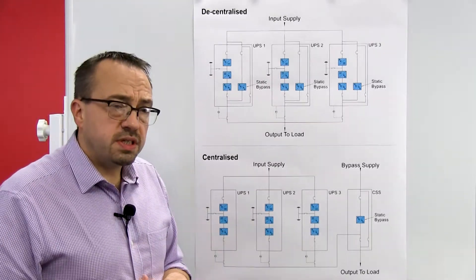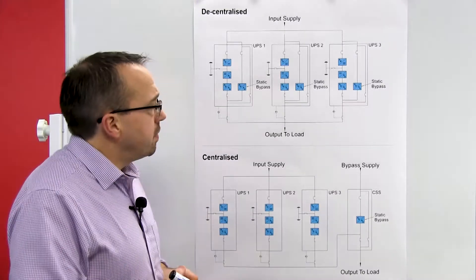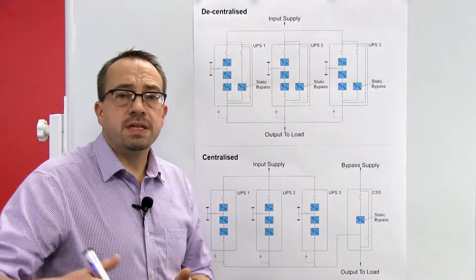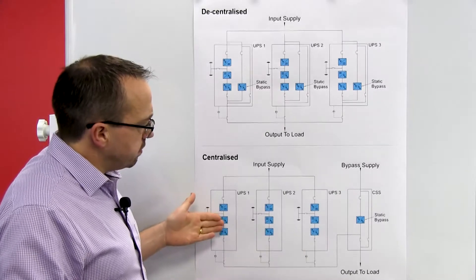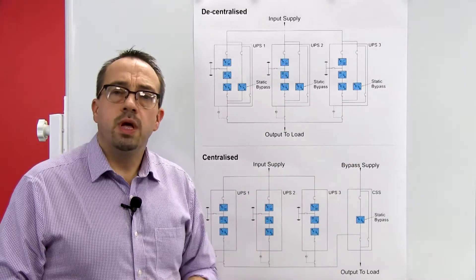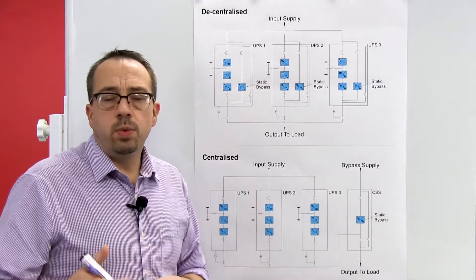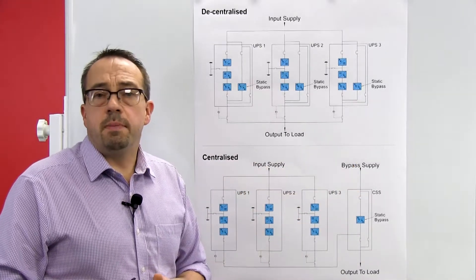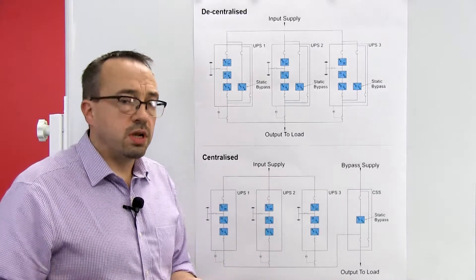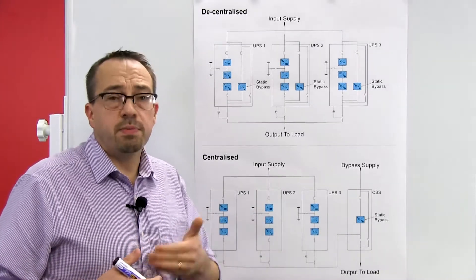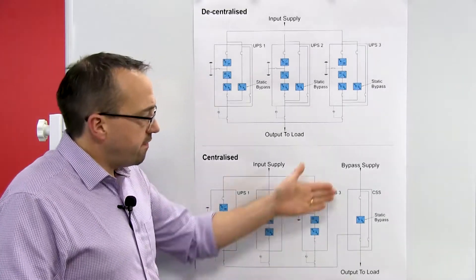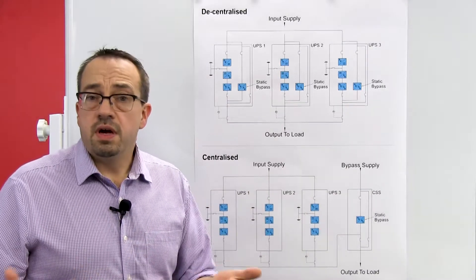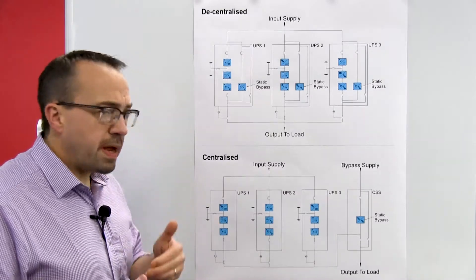You also have to consider initial investment and future planning. With a decentralized system you can simply add modules in the future to increase overall capacity. With a centralized system you must consider the rating of the bypass module from day one — if it's not rated to handle future load growth, you may need to replace it with a larger module. Conversely, if you over-specify it from day one it could be a very expensive purchase, leaving you with a static bypass module far oversized for the final installation.